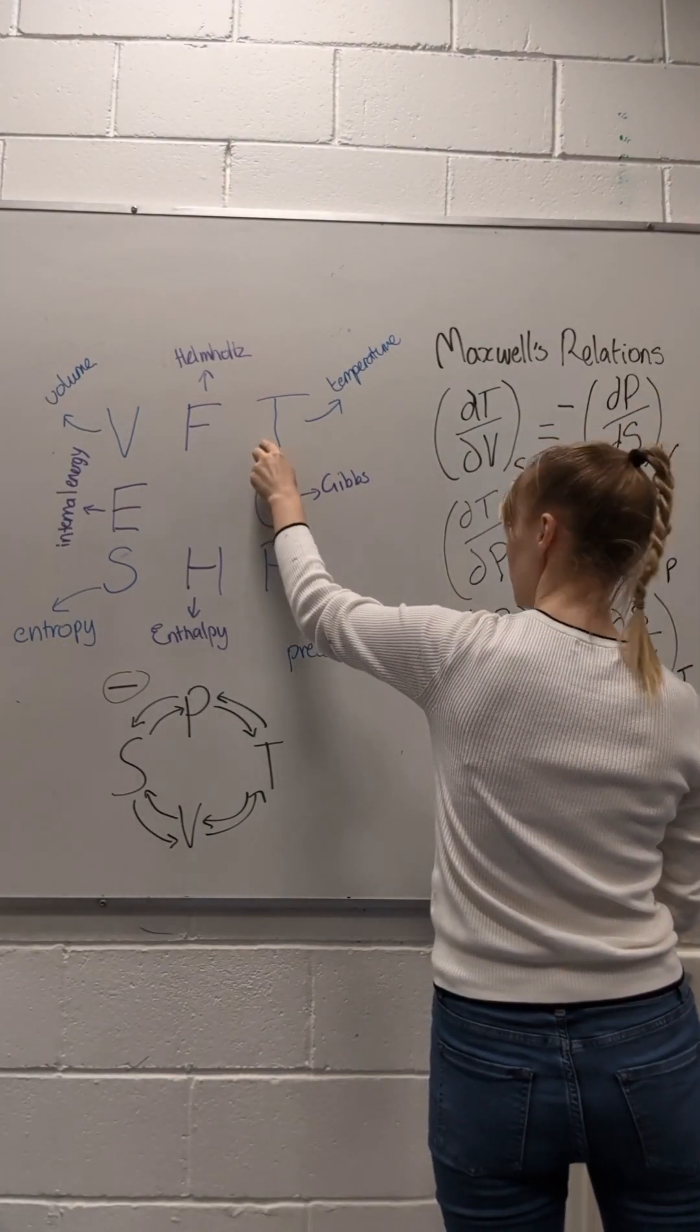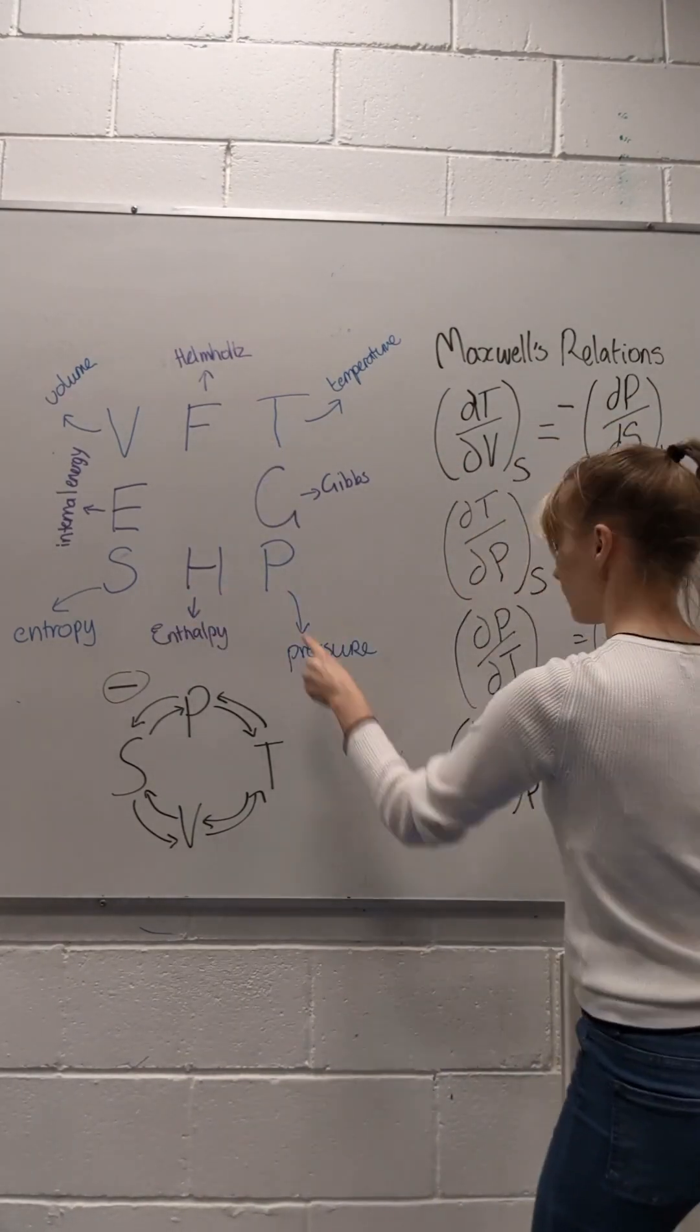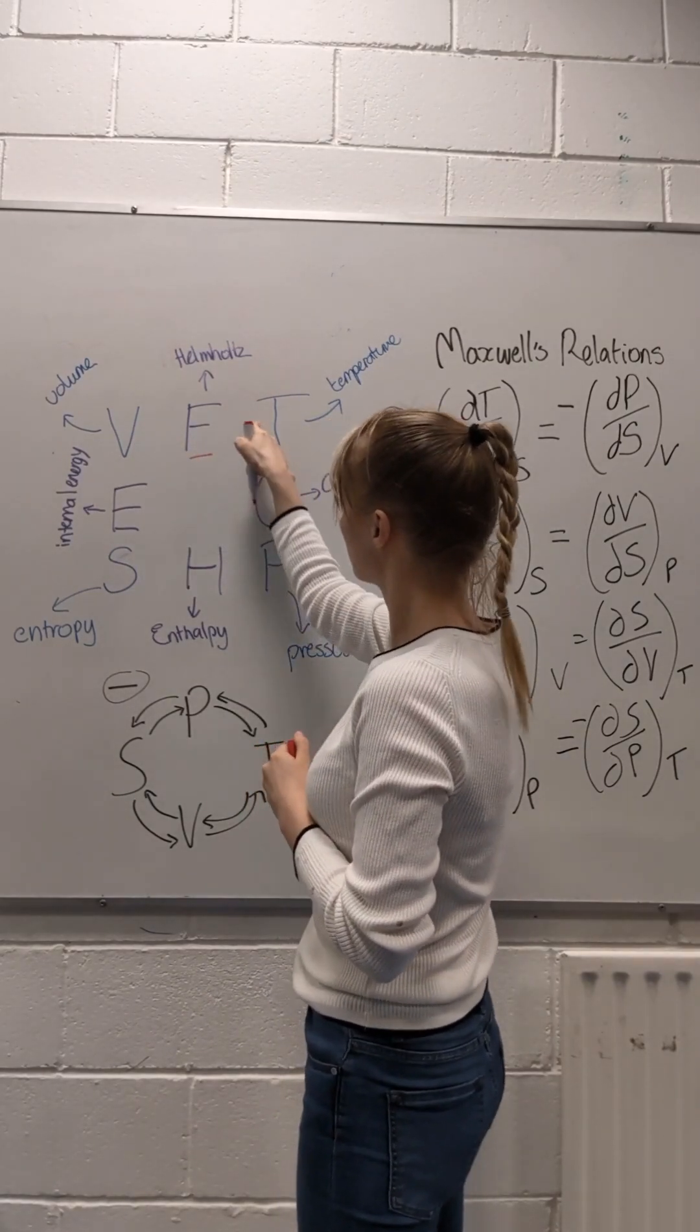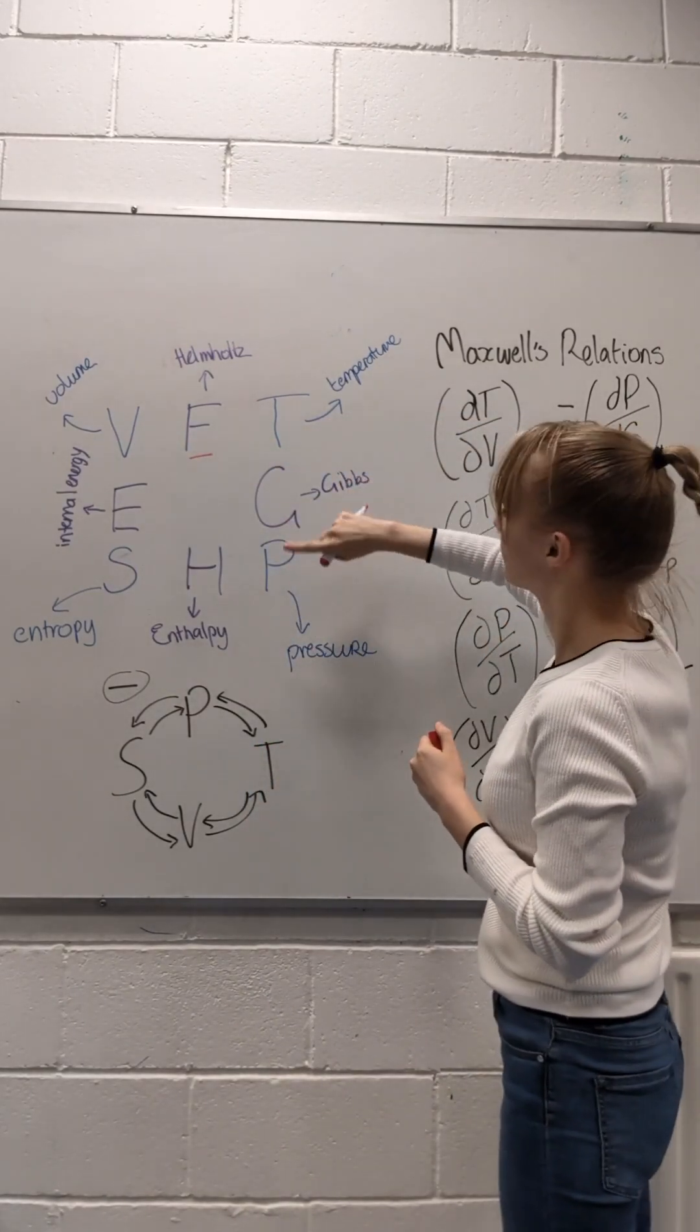You can also determine what the natural variables are for each parameter using this thermodynamic square. Beside Helmholtz, the natural variables are volume and temperature, and beside Gibbs it's temperature and pressure, and so on.